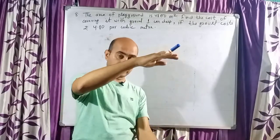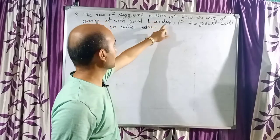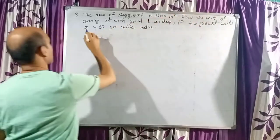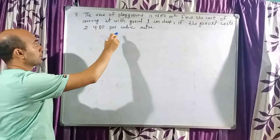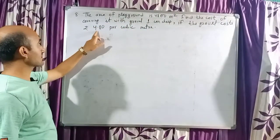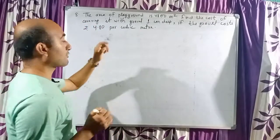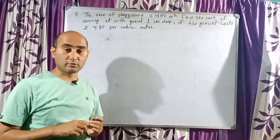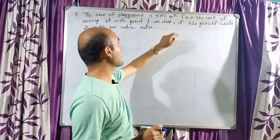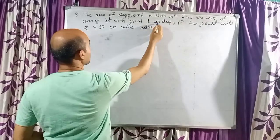The playground will be covered with gravel and brought up to some height. Its depth — deep means height — will be 1 centimeter deep. And if the gravel costs 4 rupees 80 paise per cubic meter, you have to find the cost of covering it. First you have to find the volume of the playground. Here one problem is that the area is in meter square and the depth of the playground is in centimeter, so let us convert this centimeter into meter.